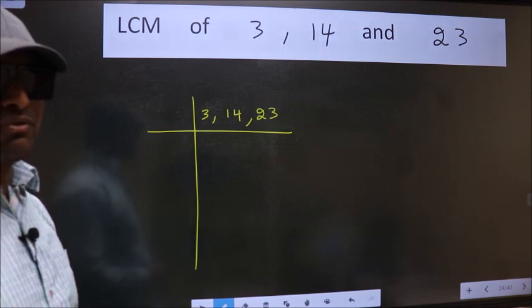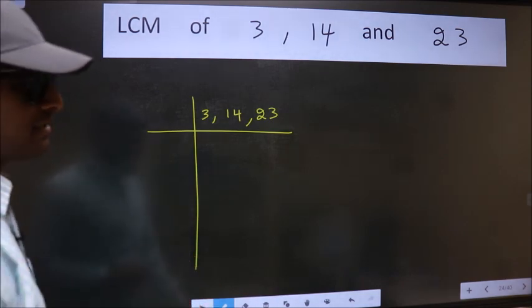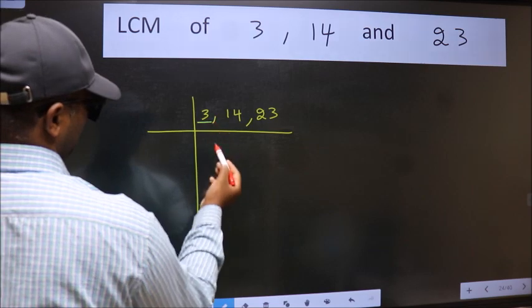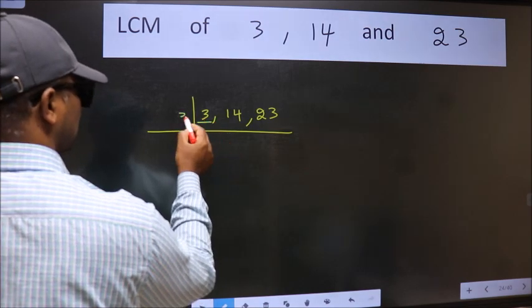Now we should focus on the first number which is 3 here. 3 is a prime number so 3 goes into 3 once.